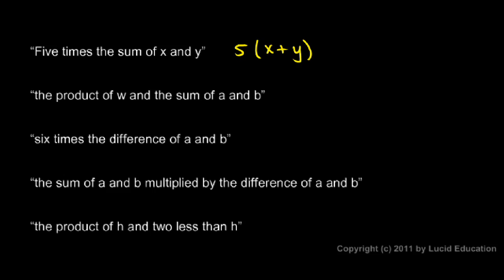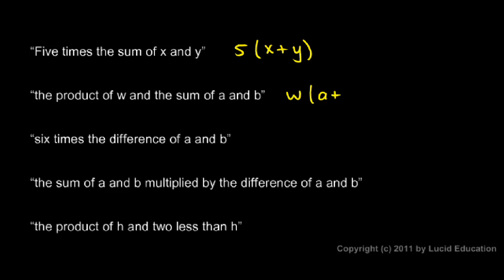Let's look at the next example: the product of w and the sum of a and b. This one is very similar. We have w and the sum of a and b, and we have the product of those two things, so that means we need w and the sum of a and b multiplied together. So we write w, and then the sum of a and b as (a plus b) in parentheses — w times (a plus b).